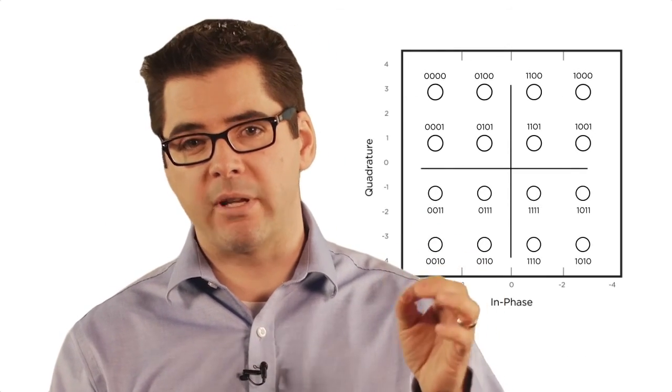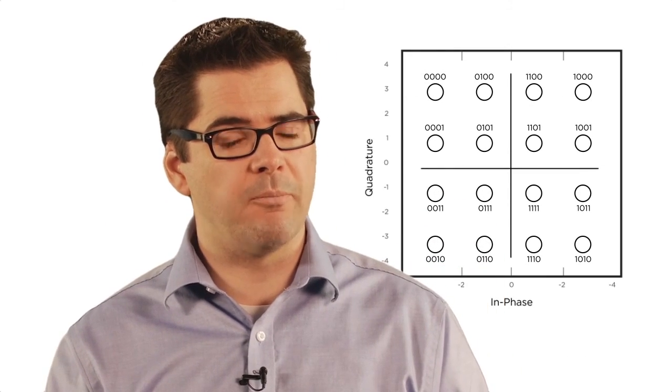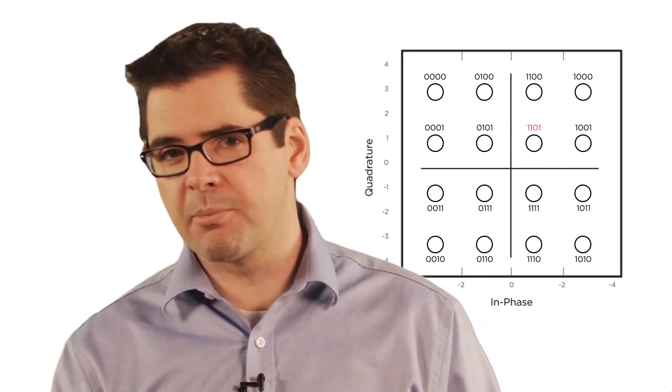Now how do we do that? Well we use 16 constellation points. That's where the 16 comes from in 16QAM. Those 16 constellation points will give us 4 bits per symbol and allow us to carry a lot more information in your existing fiber plant.